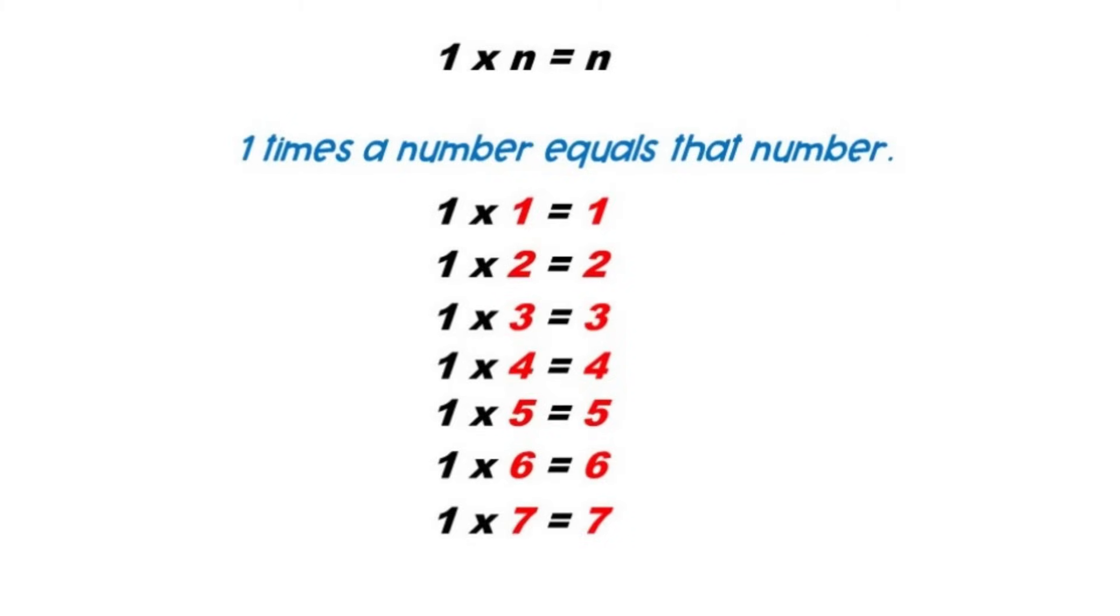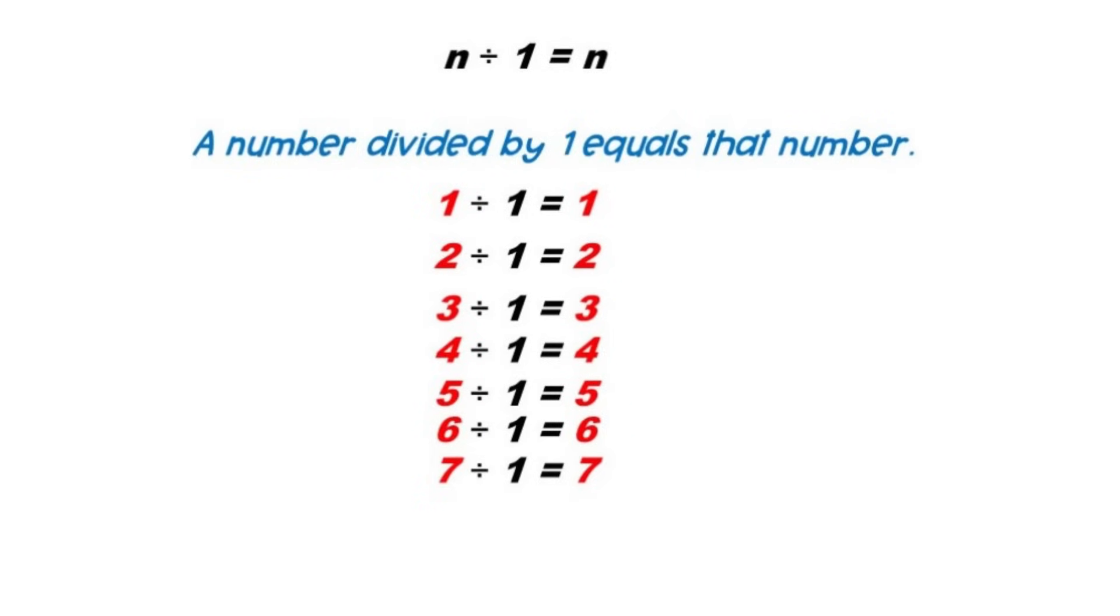The rule of multiplying by one. One times a number equals that number. The rule of dividing by one. A number divided by one equals that number.